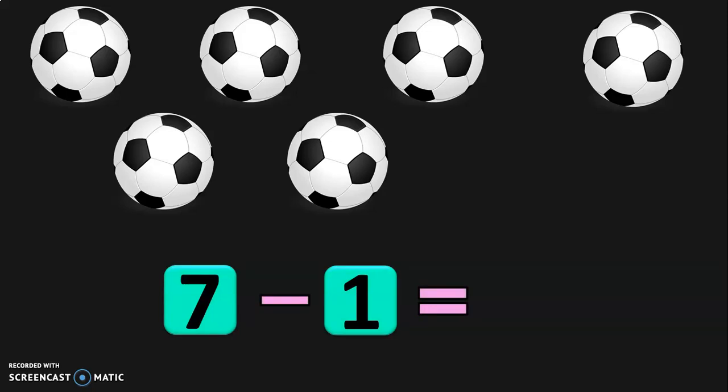Let us do the next sum. In a school PT room, there were few footballs. Let us count: 1, 2, 3, 4, 5, 6, 7 — you may also call it a soccer ball. There were 7 footballs, and 1 was taken away, leaving 6. So 7 minus 1 equals 6. This is a property of subtraction: whenever you subtract a number by 1, you get the before number — the before number for 7 is 6. The properties of subtraction video is linked below.